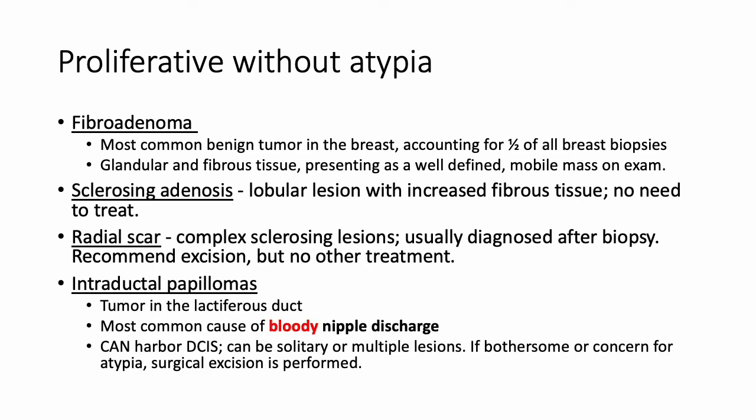Intraductal papillomas will be the typical clinical vignette with a patient presenting with bloody nipple discharge — they are the most common cause of that. They are tumors in the lactiferous ducts, and can be solitary and centrally located or multiple and peripherally located. They most commonly occur in women ages 30 to 50 and are typically small but can present as a palpable mass up to 5 centimeters. Importantly, they can harbor ductal carcinoma in situ, though they're not usually associated with cancer. Surgical excision is performed if bothersome or if there is concern for atypia.